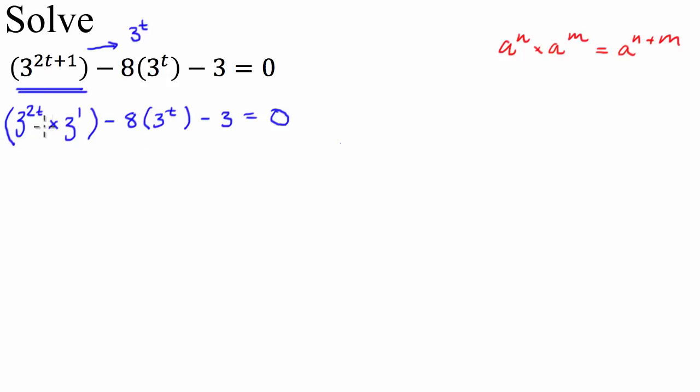Well, to get this to look more like this, I'm going to use the index law we use when we have brackets. A to the m all to the n, or a to the n all to the m, is equal to a to the n times m. So here we have 3 to the power of t times 2. So we're going to change that to, we'll start with our outside bracket, then we have an inside bracket with a 3t inside it, all to the power of 2 times by 3 to the power of 1, let's leave it as 3, minus 8 times 3 to the power of t, minus 3 equals 0.